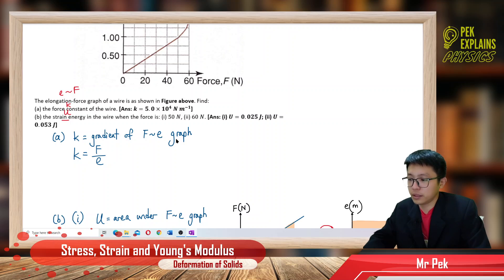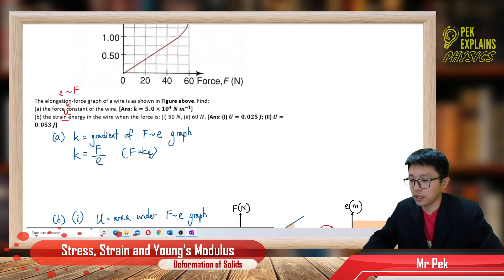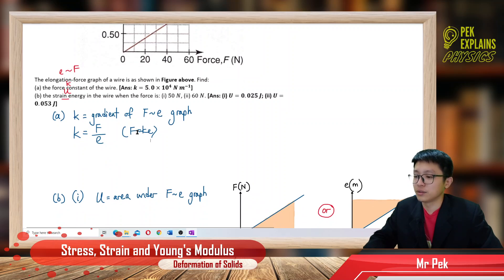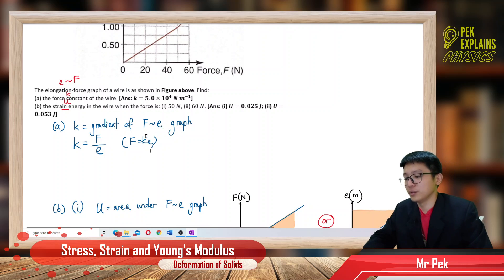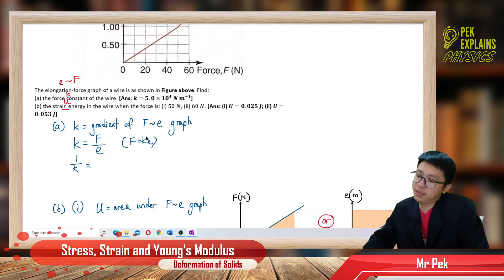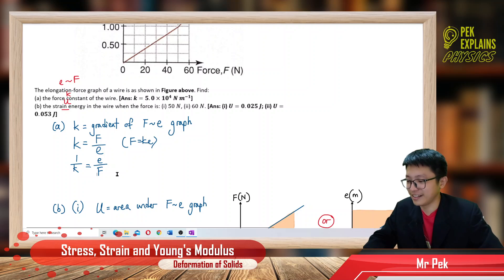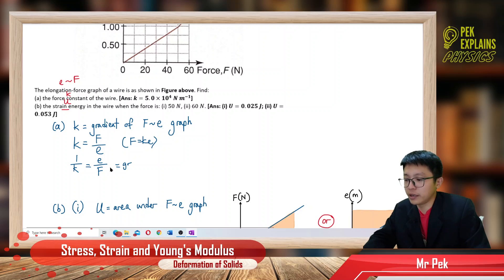This comes from F equals KE, so to find K it's F over E — the gradient of the F-E graph. But we don't have the F-E graph; we have the E-F graph. So we invert: K becomes 1 over K, and F over E becomes E over F. It becomes the gradient of the E versus F graph.